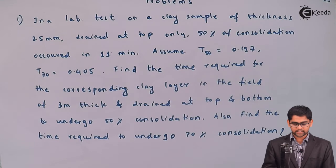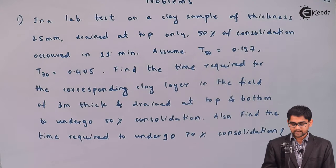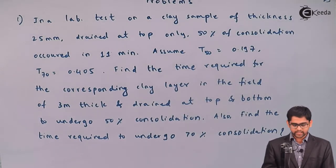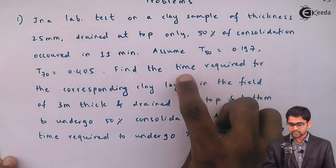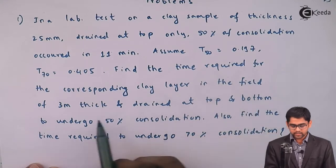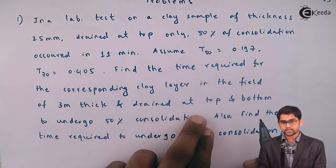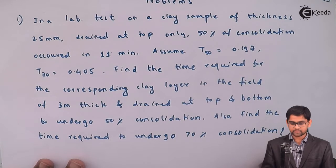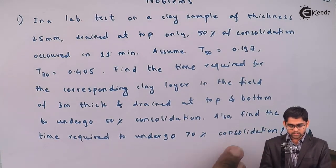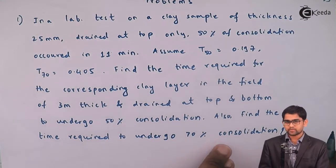In a lab test on a clay sample of thickness equal to 25 mm, drained at the top, 50% consolidation occurred in 11 minutes. The time factor corresponding to 50% consolidation is 0.197, and the time factor for 70% consolidation is 0.405. You have to determine the time required for a corresponding clay layer in the field, which is 3 meters thick and drained at both top and bottom, to undergo 50% and 70% consolidation.